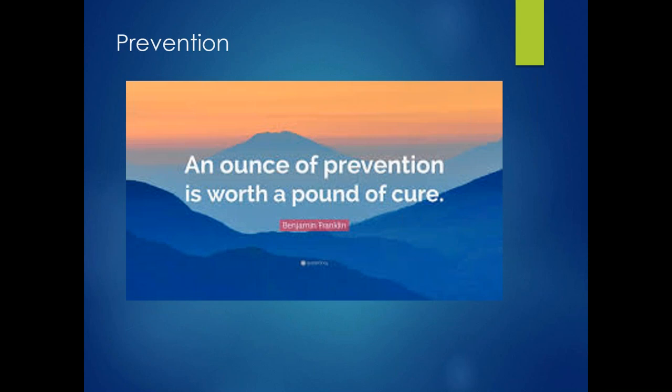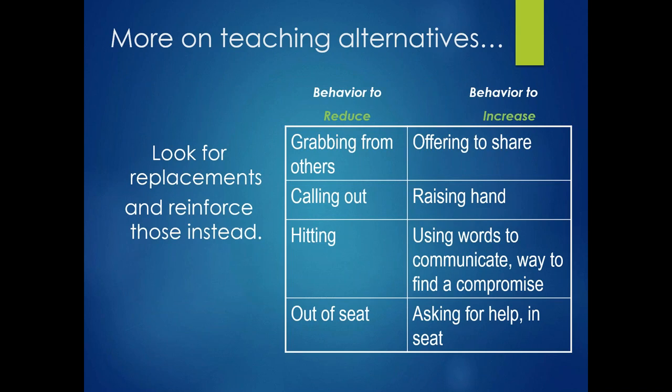We would seek first to prevent the problem behavior, and we would seek to teach alternative skills. If the behavior is grabbing from others, we would teach the child to share. If the behavior is calling out, we might teach the child to raise their hand. If we see hitting, we might teach the child to use words to communicate or find a way to compromise. If the child is out of their seat, we may teach the child to ask for help or reinforce in-seat behavior. These matches depend on the function — if they're grabbing to gain an item, then offering to share would meet that function.